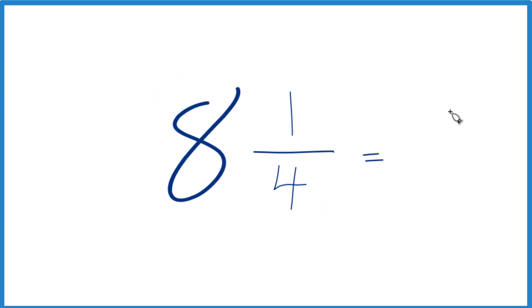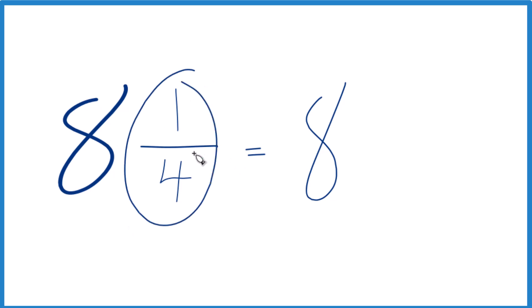So 8, that's a whole number. We can just keep that as 8. It's this 1/4 we need to get to be a decimal, and you might know that 1/4 is the same as 0.25.